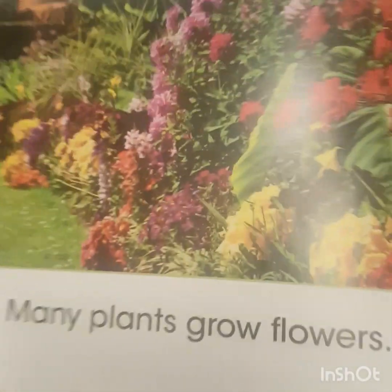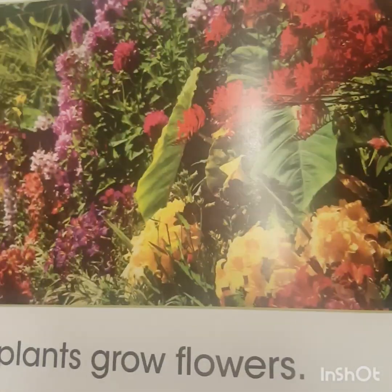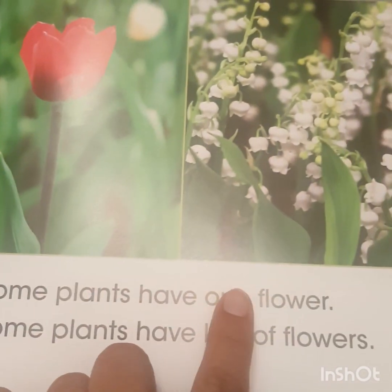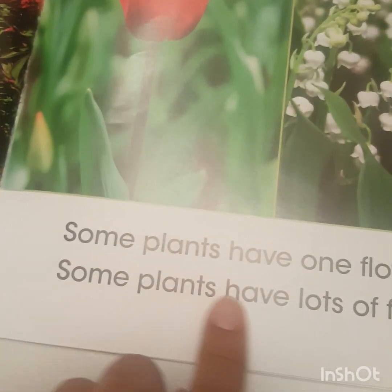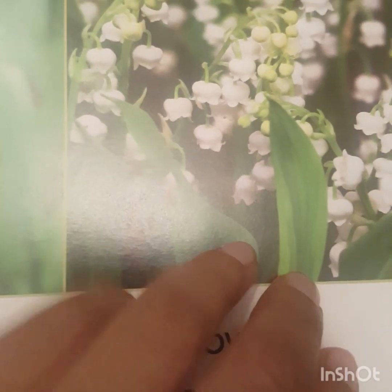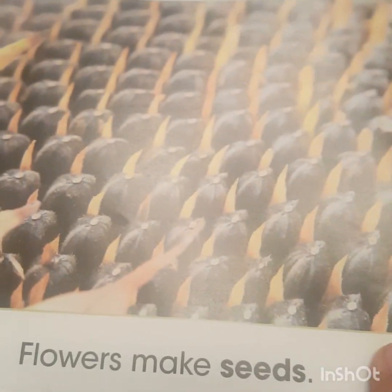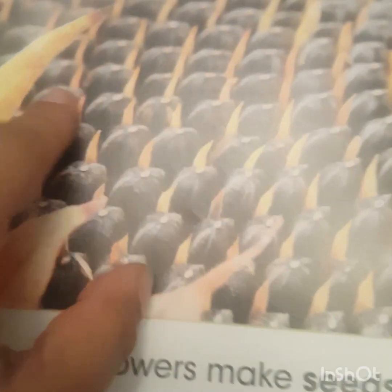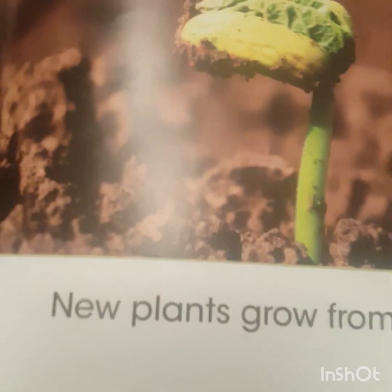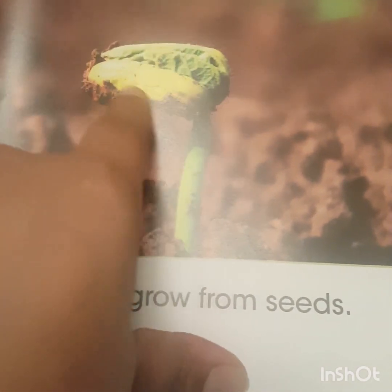What are flowers? Many plants grow flowers. This photograph is showing you the different plants and the flowers that grow from them. Some plants have one flower. Some plants have lots of flowers. Flowers make seeds — all these little seeds here in this flower. New plants grow from seeds. Here it is emerging through the soil — the new plant.